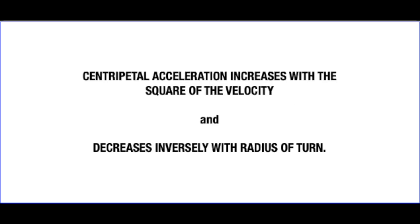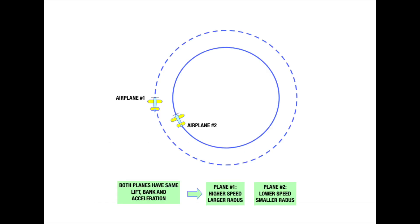Owing to the inverse relationship between velocity and radius of turn, a given horizontal component of lift can either give us a short radius of turn at a low velocity, or a large radius of turn at a high velocity. In other words, the lower velocity airplane with the lower radius of turn has the same centripetal acceleration as the higher velocity plane with the higher radius of turn. That is provided that the horizontal component of lift is the same for both airplanes.